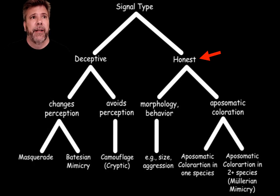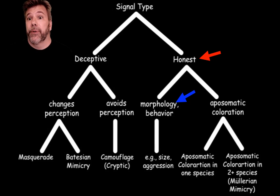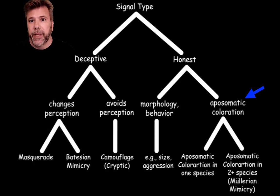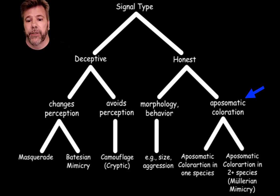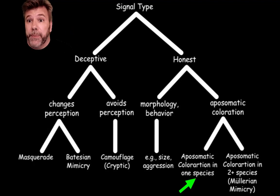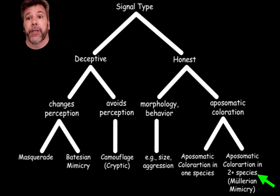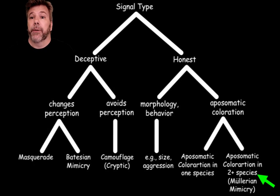All of those are different kinds of deceptive signals. For honest signals, we have morphological or behavioral features lumped together as one kind, and then aposematic coloration, which has been so widely studied that it gets its own branch. Under aposematic coloration, you can have a single species being brightly colored as a warning, or you can have multiple species all looking the same and all being brightly colored — which we call Mullerian mimicry.